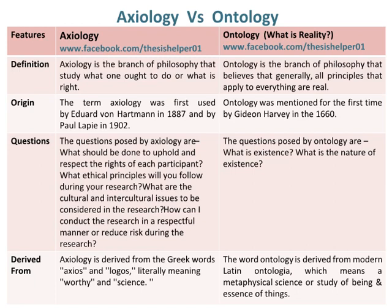The term axiology was first used by Eduard von Hartmann in 1887 and by Paul Lappi in 1902. Whereas, ontology was mentioned for the first time by Gideon Harvey in the 1660s.